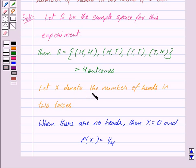Since X denotes the number of heads in two tosses, out of these four outcomes, there is only one outcome in which there are no heads when two coins are tossed. So we get probability of X equals one upon four.